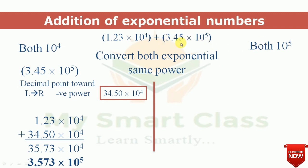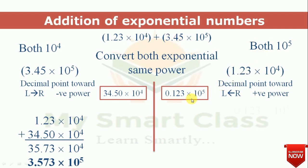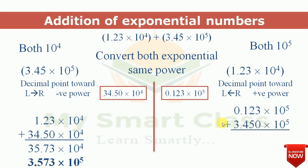Now the second method: convert both numbers to 10⁵. Since 3.45 × 10⁵ is already there, we convert 1.23 × 10⁴ to 10⁵ by shifting the decimal point one place to the left, giving 0.123 × 10⁵. Now adding: 0.123 × 10⁵ plus 3.450 × 10⁵ equals 3.573 × 10⁵.